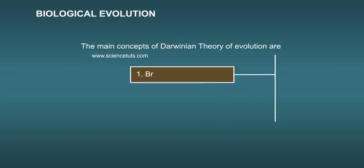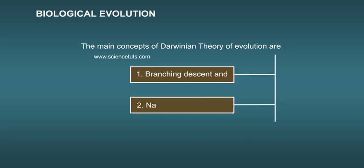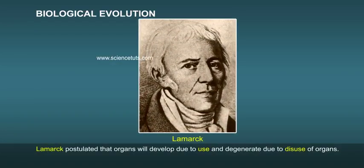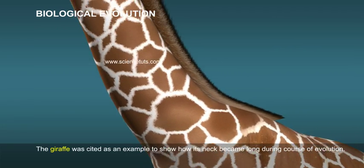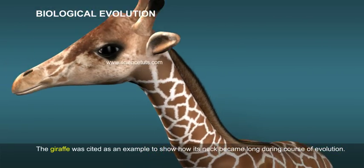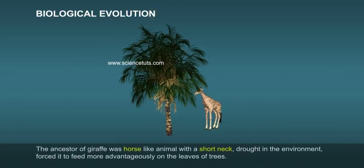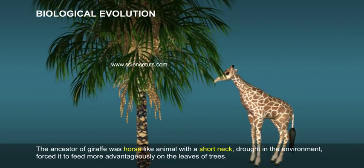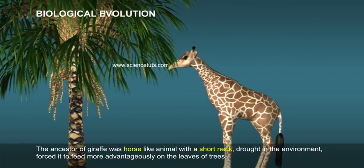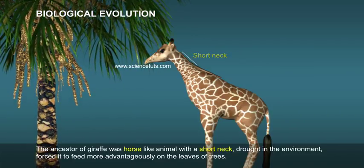The main concepts of Darwinian theory of evolution are: one, branching descent, and two, natural selection. Lamarck postulated that organs will develop due to use and degenerate due to disuse. The giraffe was cited as an example to show how its neck became long during the course of evolution. The ancestor of the giraffe was a horse-like animal with a short neck; drought in the environment forced it to feed more advantageously on the leaves of trees.